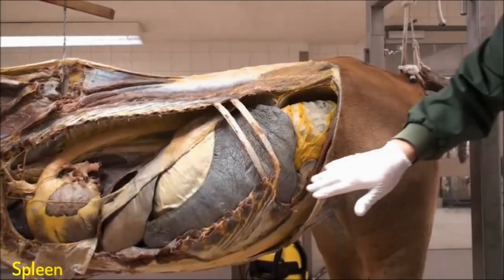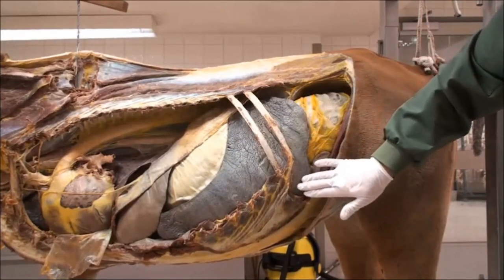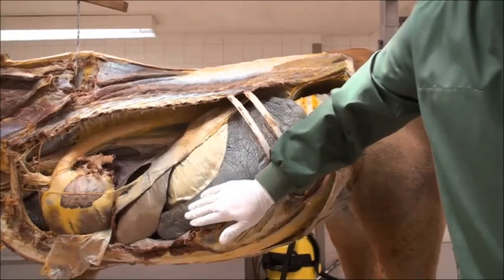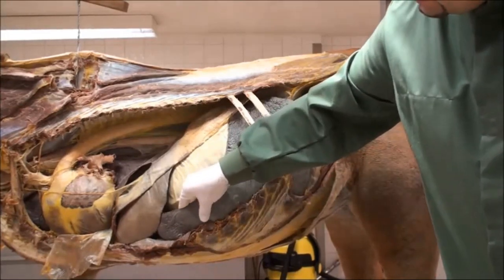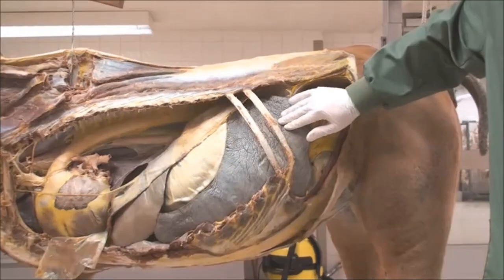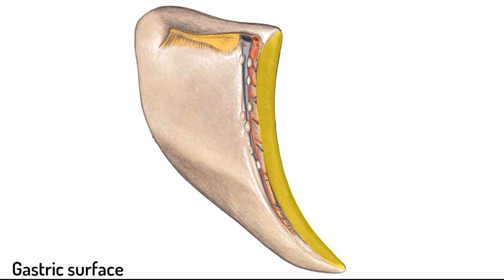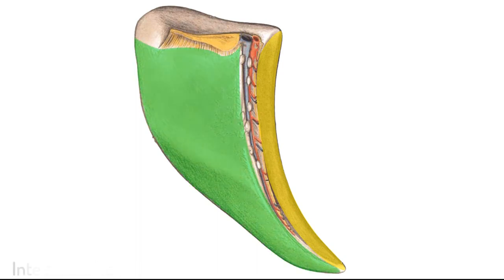The spleen is located on the left side inside the intrathoracic part of the abdominal cavity in the horse. This is the dorsal extremity or the base of the spleen, and down here we have the apex or the ventral extremity. This is the parietal surface of the spleen, while the visceral surface of the spleen in the horse is subdivided into the gastric impression — the surface where the spleen is attached to the stomach — and caudally the intestinal impression or intestinal surface of the spleen.